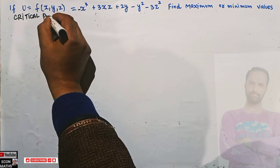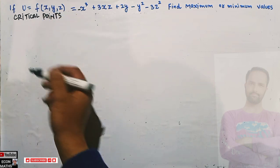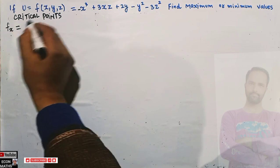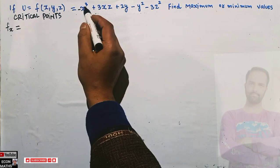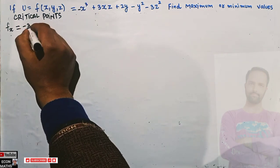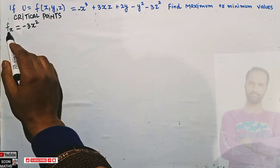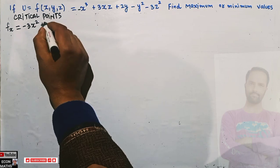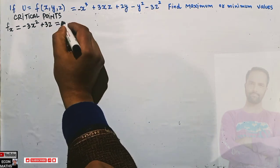To find the critical points, we take the partial derivative with respect to x and set it equal to zero. The derivative of -x³ is -3x², and since the derivative of z with respect to x gives us +3z, we get: -3x² + 3z = 0.